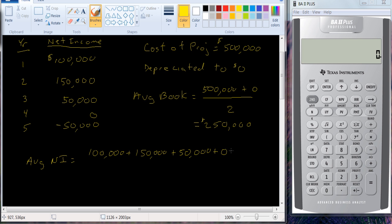Plus 50,000 in the third year. In the fourth year, we have no net income, and in the final year we actually lost money. And we're going to divide that by five, so we could come over here and just add these up really quickly.